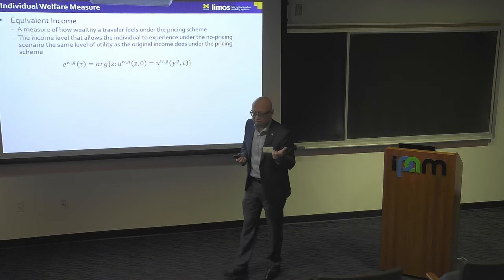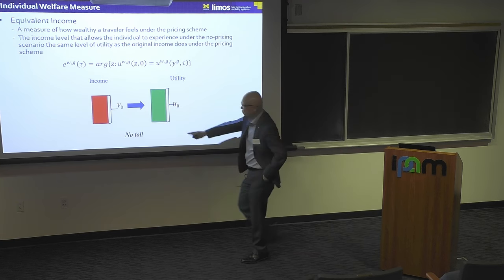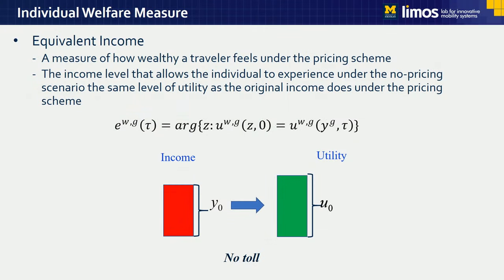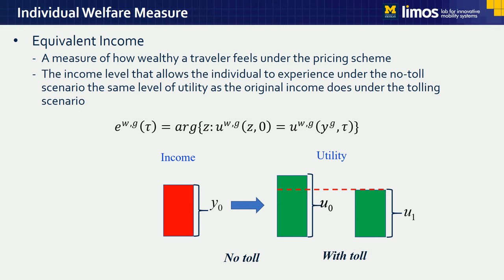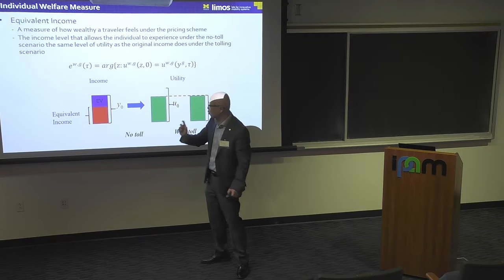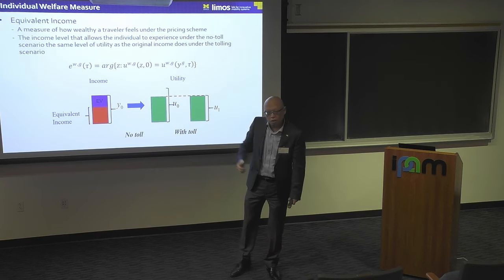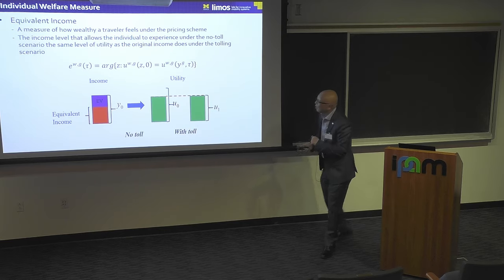To elaborate: you have an original income, and for the no-toll scenario you have a utility. When I impose a tolling scheme, suppose your utility reduces. I then adjust income such that this utility matches the utility under tolling — that's my equivalent income. Because pricing reduced your utility, your equivalent income will be less than your original income. The difference is the equivalent variation — a measure of the change in utility. It's a standard definition in economics.